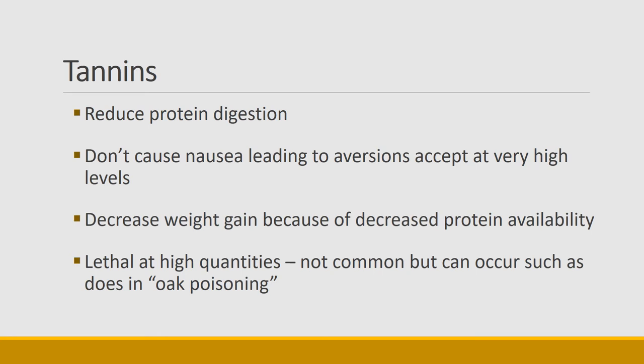Now switching gears to compounds that are common in plants but take a lot to cause damage — often called quantitative toxic compounds. The first among those is tannins. What tannins do is reduce protein digestion, so they don't usually cause nausea leading to aversions unless eaten in very high quantities. The term tanning hides may be familiar — originally, tannins from plants were rubbed on a hide, and because of that characteristic of reducing digestion, it was a way to tan the hide and keep it from being degraded by bacteria.